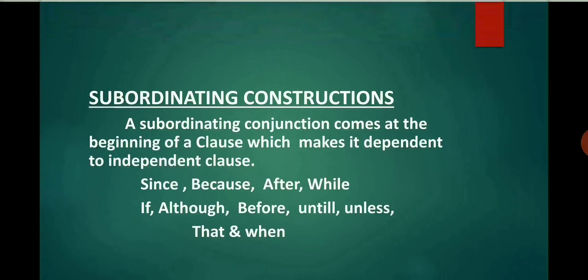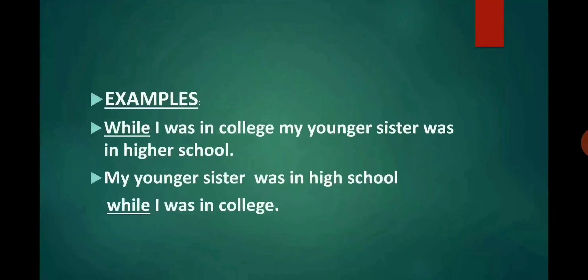An example is: While I was in college, my younger sister was in high school. In this sentence, 'while' is a subordinating conjunction. The dependent clause 'while I was in college' is placed at the start, and the independent clause 'my younger sister was in high school' follows. You can place the dependent clause at the start or at the end of the sentence.